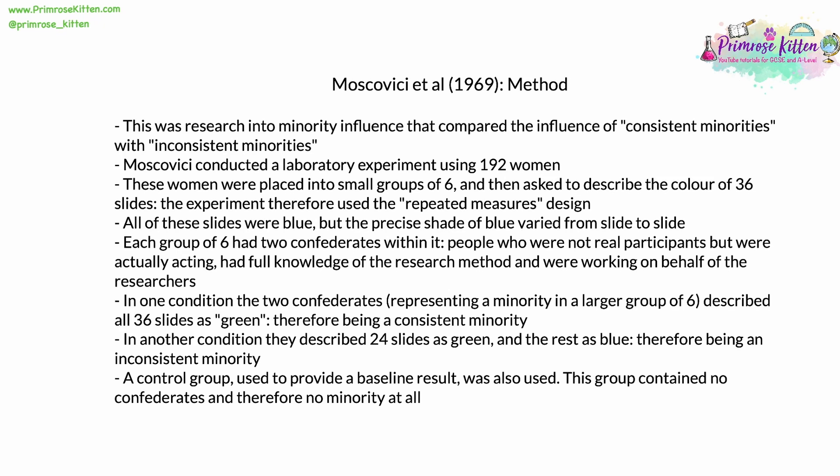In one condition, the two confederates, who represented a minority in the larger group of six, described all 36 slides as green when they were actually blue — they were therefore a consistent minority. In another condition, these confederates described 24 of the 36 slides as green and the remaining 12 as blue, making them an inconsistent minority. A control group was also used, containing no confederates at all and therefore no minority, to provide a baseline result.